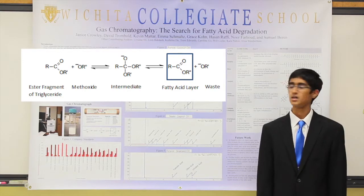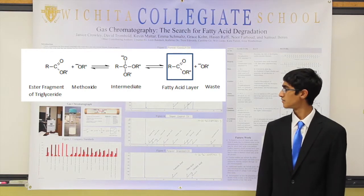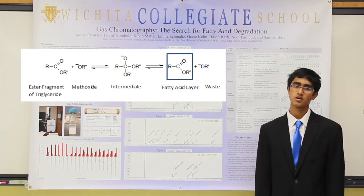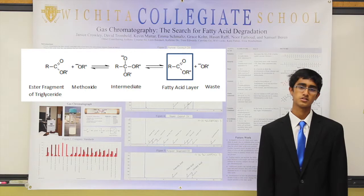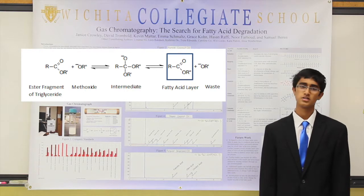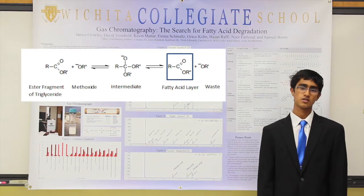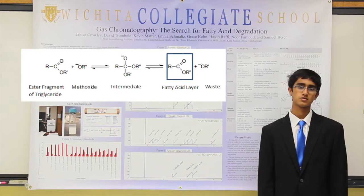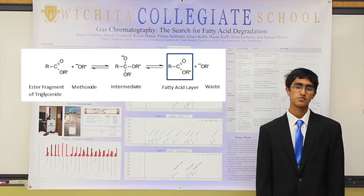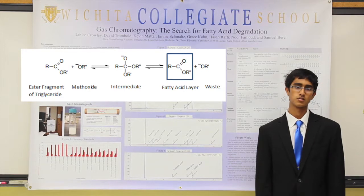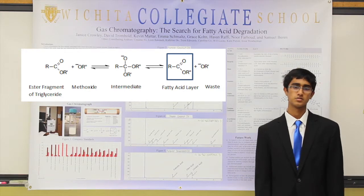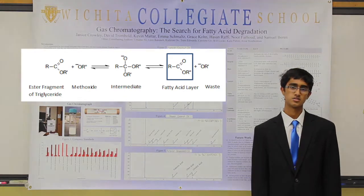We let the vial sit for a couple of minutes, and as you can see in the vial picture over there, it separates into two layers. The top layer is the methyl ester fatty acid layer, so we took that off with a pipette, separating it from the waste layer, and after filtering it a couple of times it's ready to be injected into the GC.